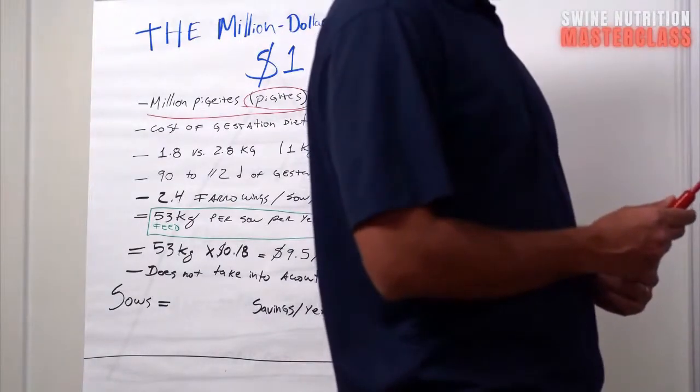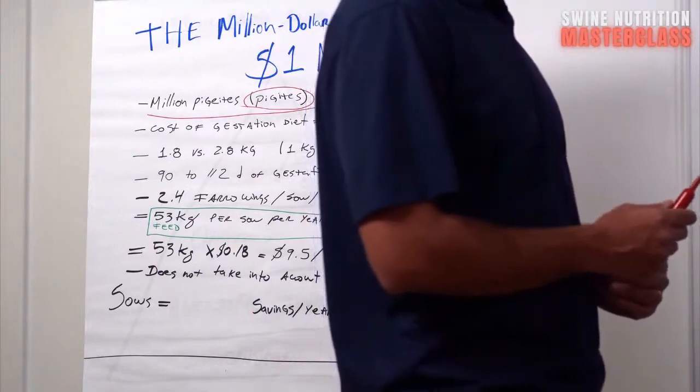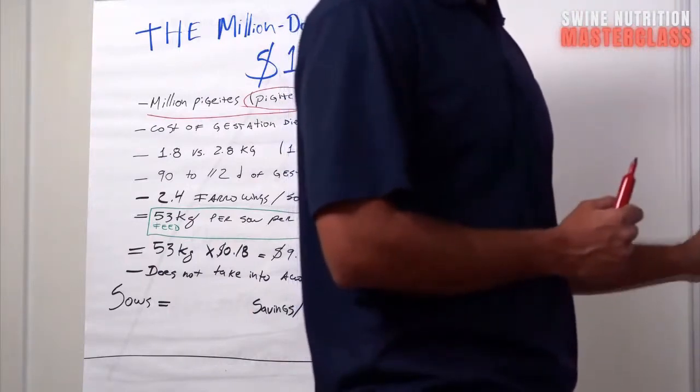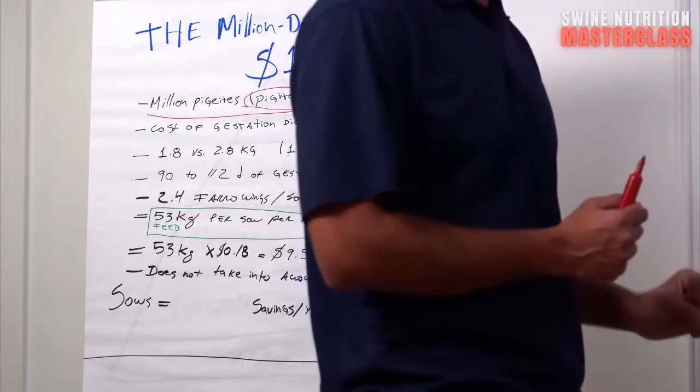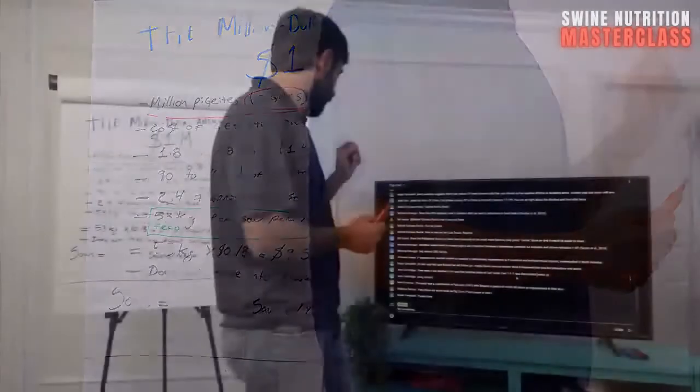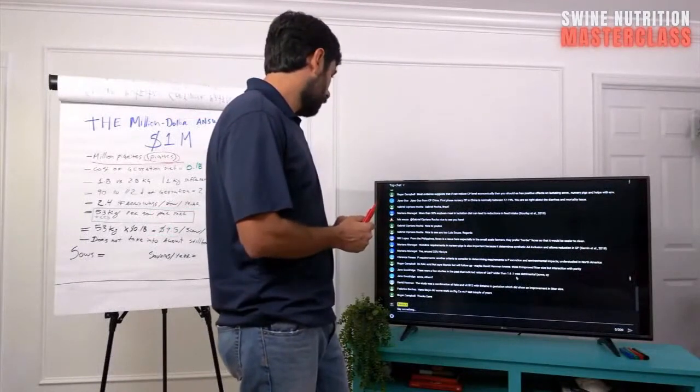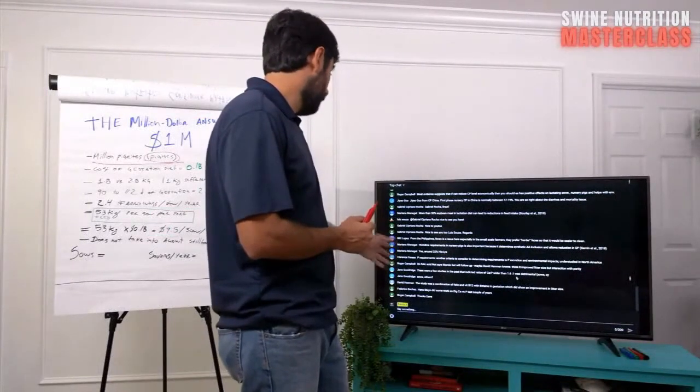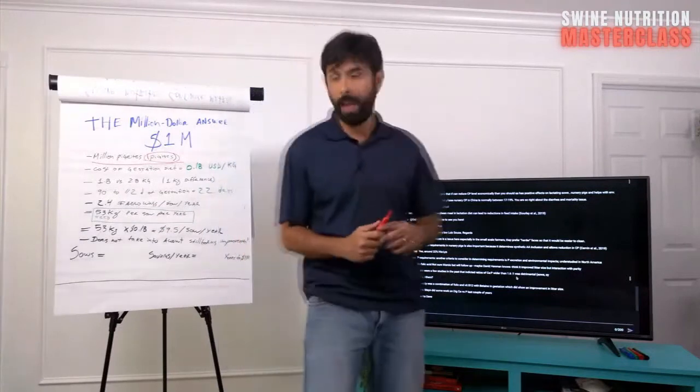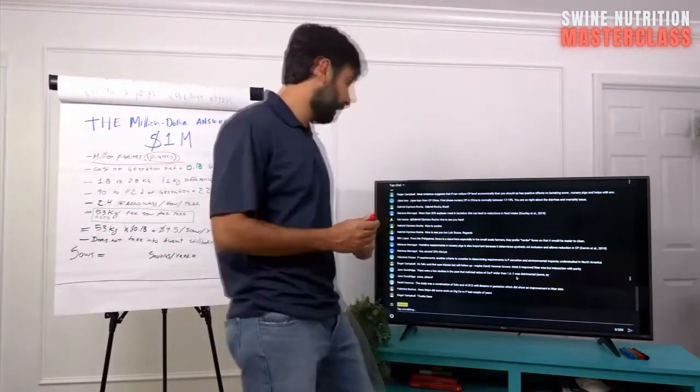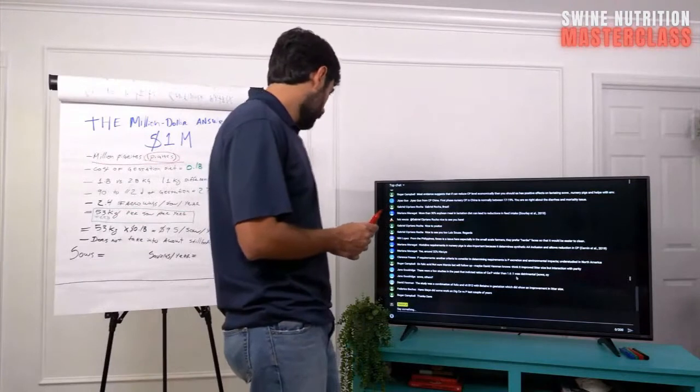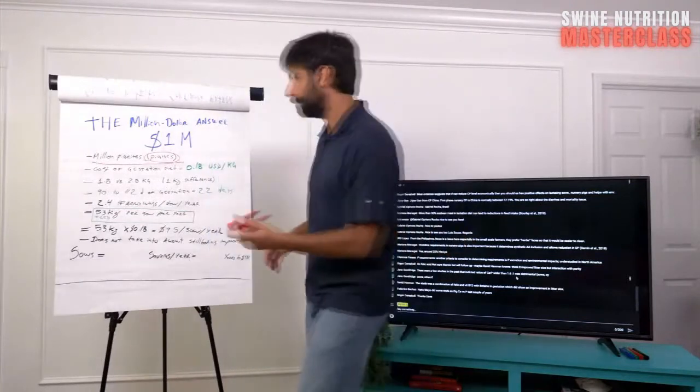Remember, Selles and others said it was a combination of folic acid and vitamin B12 with betaine in gestation, which did show an improvement in liver size. Very interesting. Thanks for sending that, David. This is very helpful. And Stein did some work on digestible calcium. Thanks, Federico. I mentioned that. Dr. Stein and Dr. Carolina Vega did a phenomenal job there. Very good. Appreciate it.